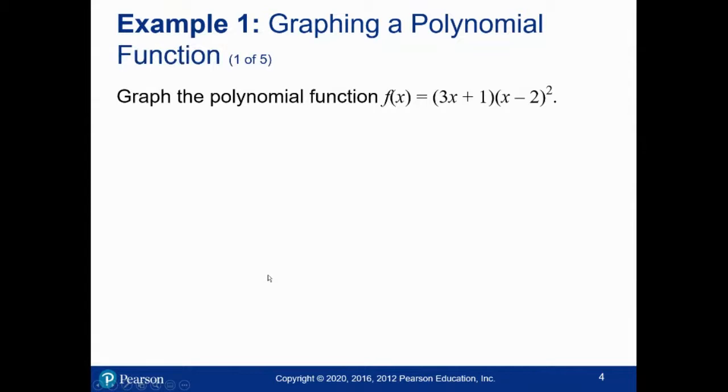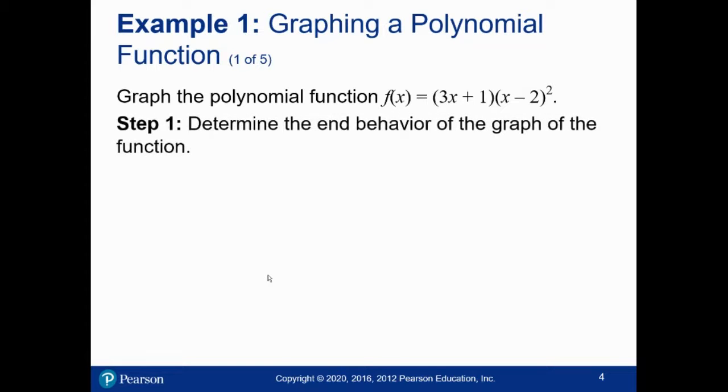So can you graph the polynomial function 3x plus 1 times (x minus 2) squared? So before bringing up the full solution, try this on your own. Ask, what are its intercepts? What are the roots? What is the multiplicity? That tells me whether the graph crosses, if it's of odd multiplicity, or just deflects, if it's of even multiplicity. How many turning points does it have in between roots? Where is it positive versus negative?